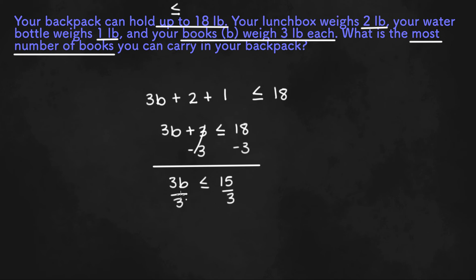Divide both sides by 3 to isolate B, and we get B is less than or equal to 15 divided by 3, or 5.